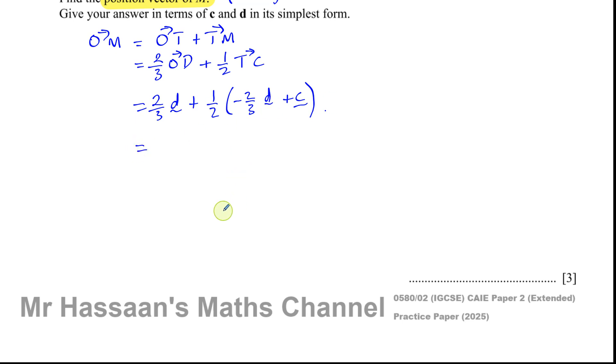So I've got to tidy this up a bit and combine like terms. So I've got two thirds of d. And that's a half times a minus two thirds, which is minus one third of d. As you can see, the terms will cancel. And a half times plus c, which is a half of c. So two thirds minus one third is one third. So you end up with one third of d plus a half of c. And there is our answer.